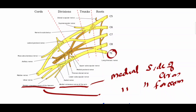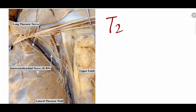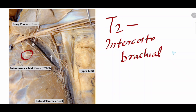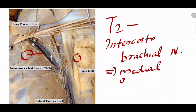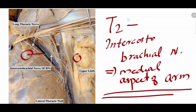What about T2? Here in this picture you can see the second intercostal nerve — T2 — which is known as the intercostobrachial nerve. This intercostobrachial nerve supplies the second intercostal space, then passes through the floor of the axilla and supplies the medial aspect of the arm. So T1 supplies the medial aspect of arm and forearm, while T2, the intercostobrachial nerve, also supplies the medial aspect of the arm.